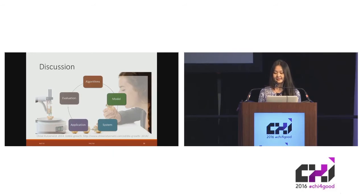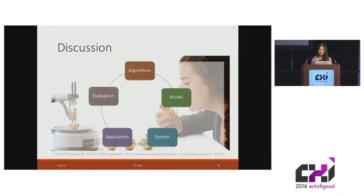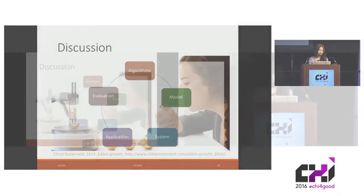Inspired by existing studies in related areas, HCI research can contribute to different aspects of data edibilization — for example, designing algorithms that map data attributes to sensory properties, building models that describe the design space of edibilization, developing systems that realize data edibilization, and experimenting with potential application domains and evaluation methods.